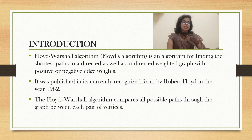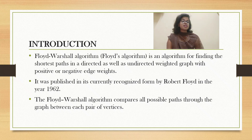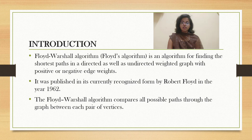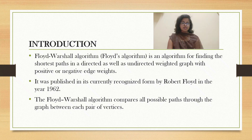The Floyd-Warshall algorithm compares all possible paths through the graph between each pair of vertices. What's the difference between Floyd-Warshall algorithm and Dijkstra's algorithm? In case of Dijkstra's algorithm, we will only be able to find the shortest path between two particular nodes. But in case of Floyd-Warshall algorithm, we will be able to find the shortest path between any pair of vertices.